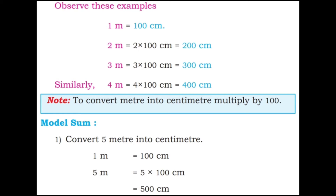Model sum: convert 5 meter into centimeter. 1 meter is equal to 100 centimeter, so 5 meter is equal to 5 into 100 centimeter, that is 500 centimeter.